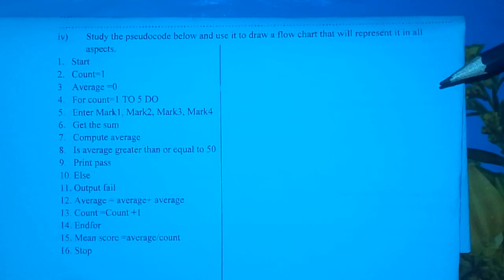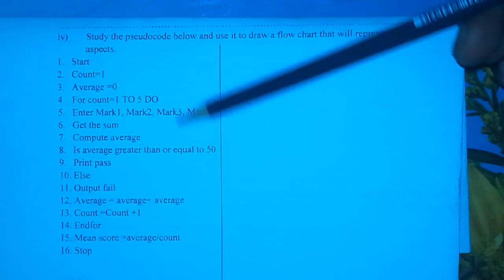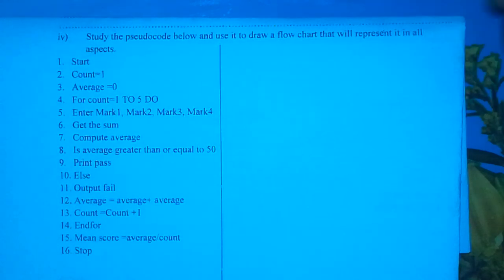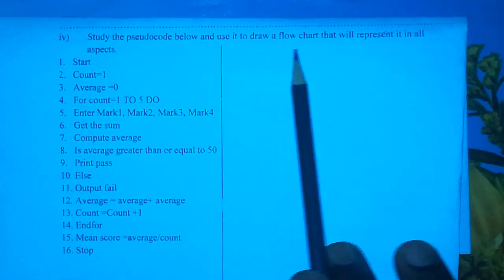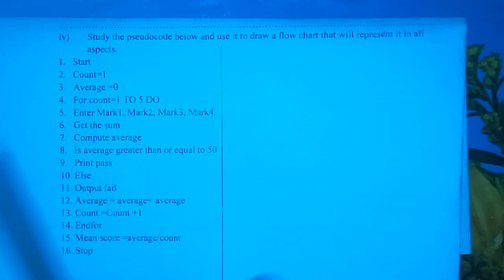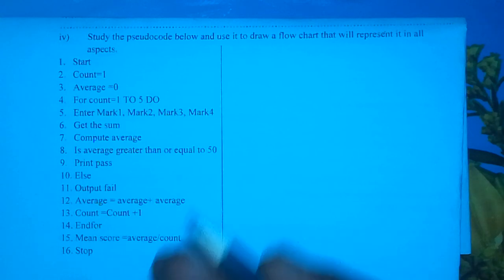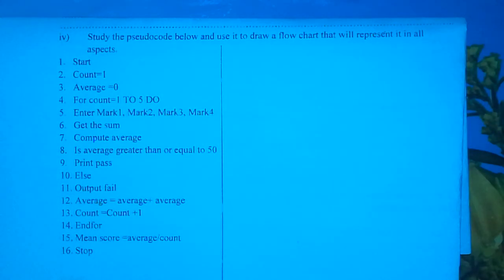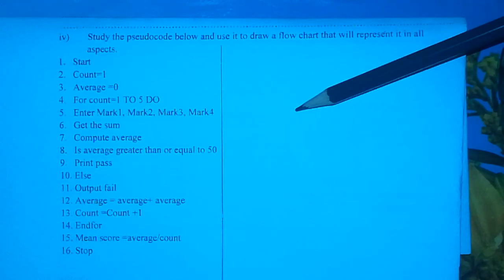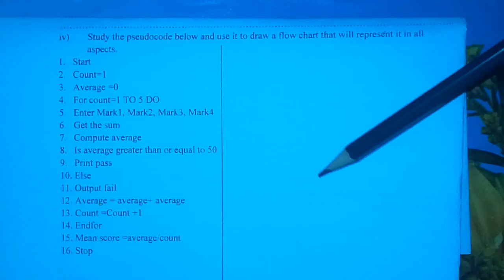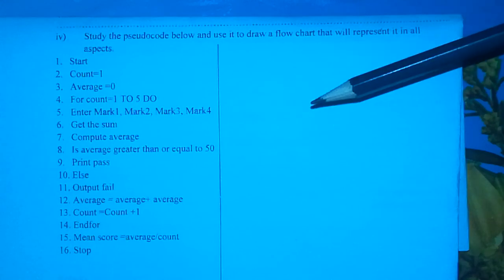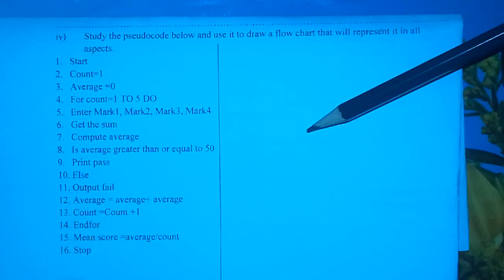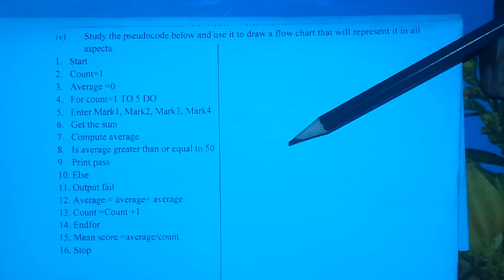Hello friends, today I'm going to get you through a question in a Computer Studies Paper 1 exam. The question is: study the pseudocode below and use it to draw a flowchart that will represent it in all aspects. That question is an elementary programming principles question, which is the topic that is in Form 3 of High School. It is usually question number 16 in the Paper 1 of Computer Studies.